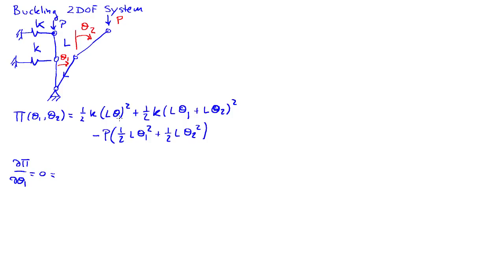From the first equation, we'll get K L squared theta 1 + K L squared (theta 1 + theta 2). The second equilibrium equation is going to give me K L squared (theta 1 + theta 2) - P L theta 2.